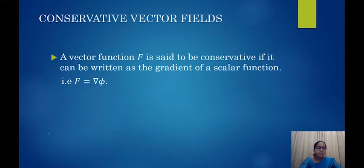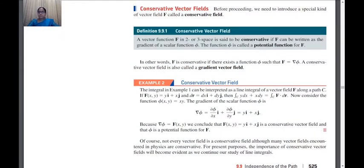Let us see a more precise definition. A vector function F in two or three space is said to be conservative if F can be written as the gradient of a scalar function — that is, F equals grad(phi). This function phi is also called the potential function of F. In other words, F is conservative if there exists a function phi such that F equals grad(phi).